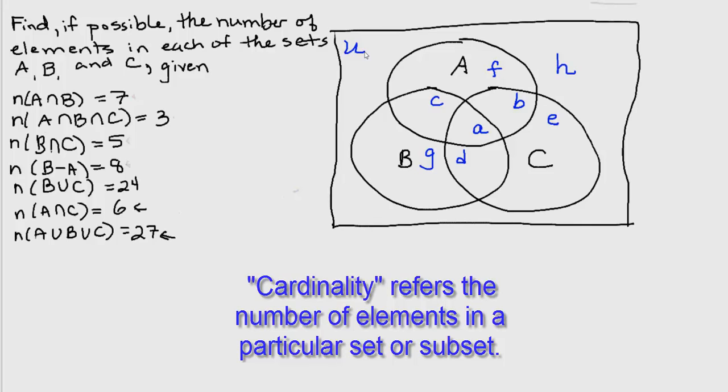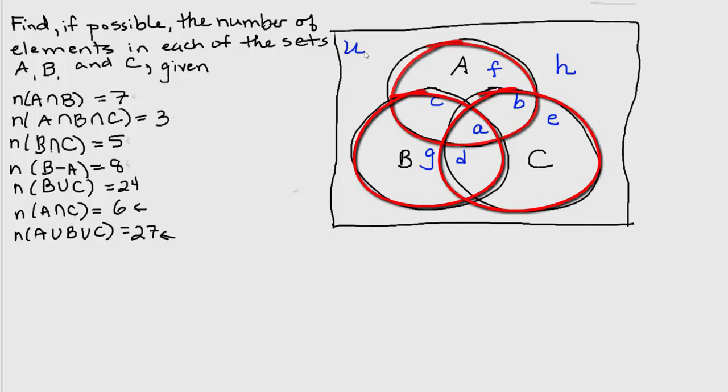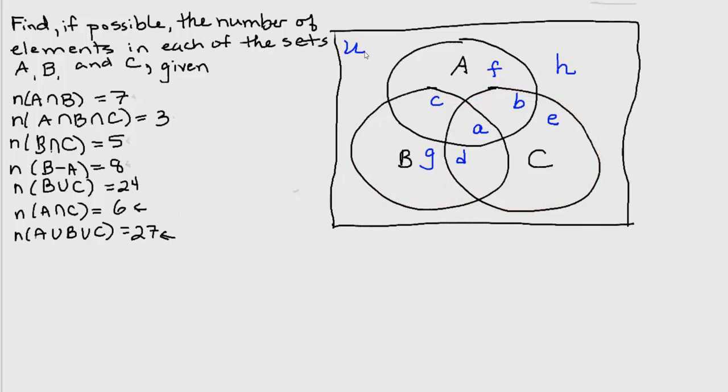Now, our goal is to be able to figure out how many elements are in each of A, B, and C. And one way to go about that is to try to figure out how many elements are in each of the regions. For example, this center region, a, lowercase a, a little almost triangular shaped region,